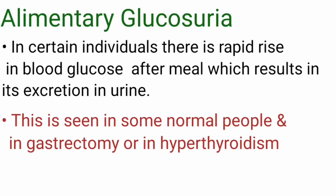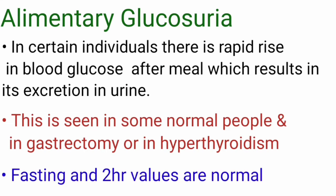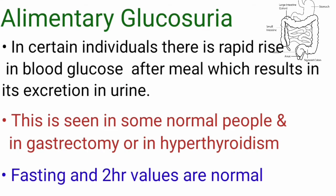In some individuals, after meals, there is a rapid rise in blood glucose levels which is excreted in the urine — this is called Alimentary Glucosuria. It is seen in some normal people and in gastrectomy or hyperthyroidism cases. Here, fasting and 2-hour blood glucose levels are normal, but there is a rapid rise in blood glucose level only after ingestion of the diet, due to an increased rate of absorption of glucose from the intestine.